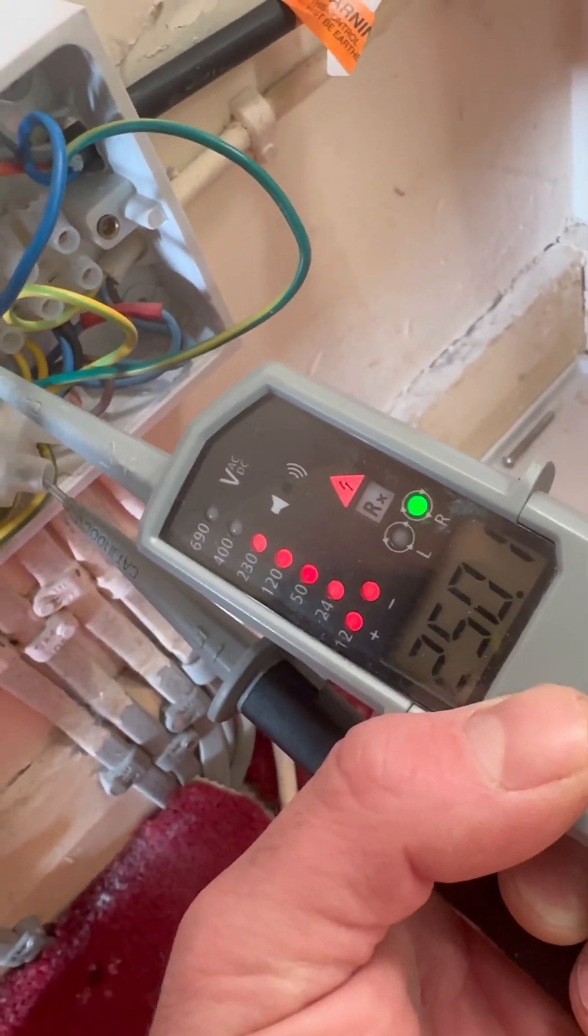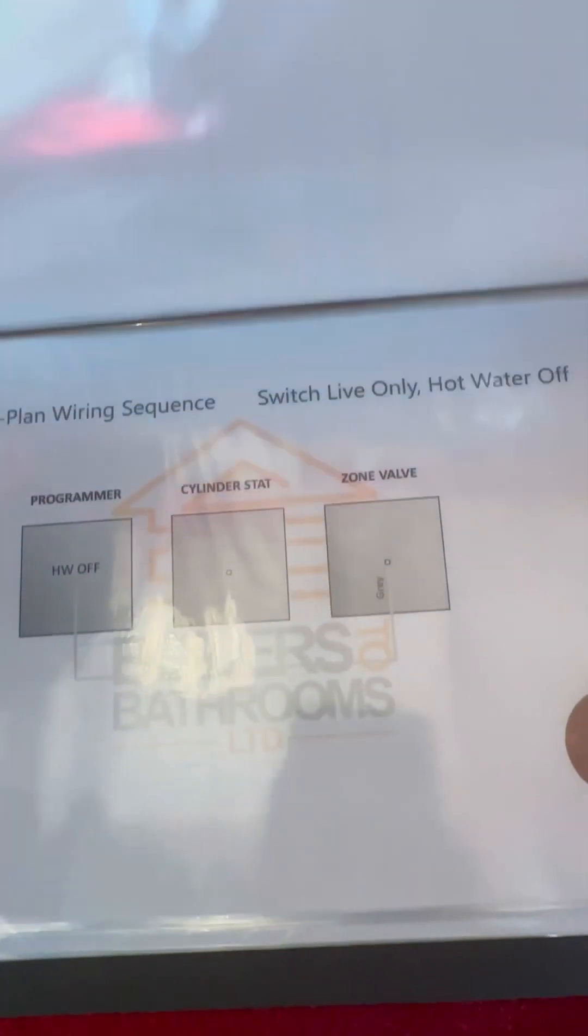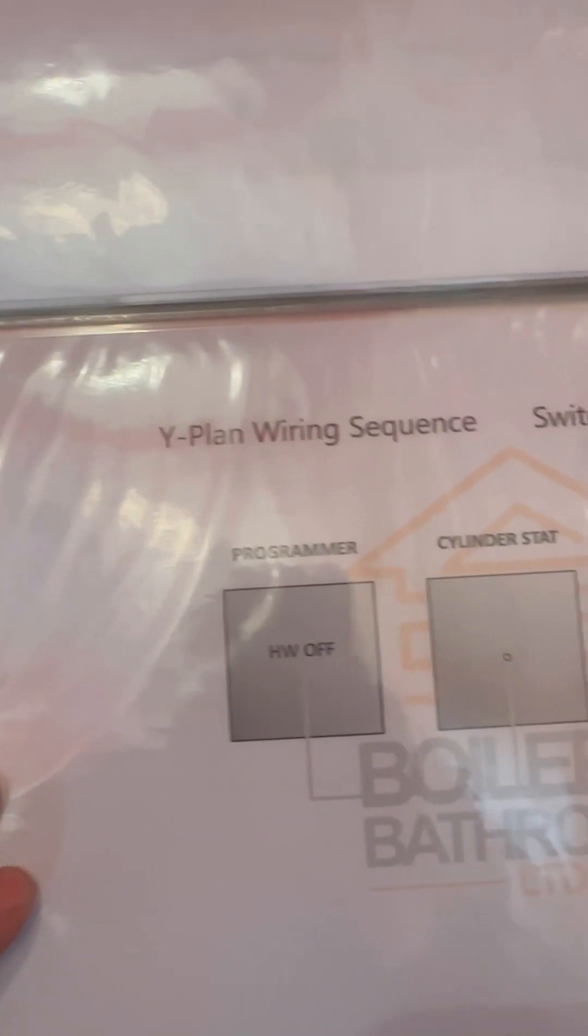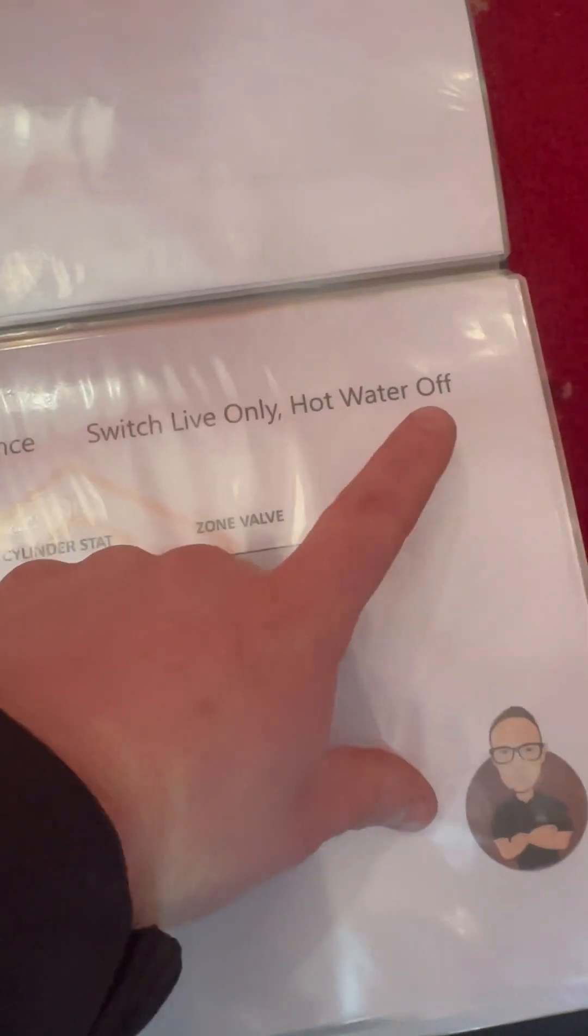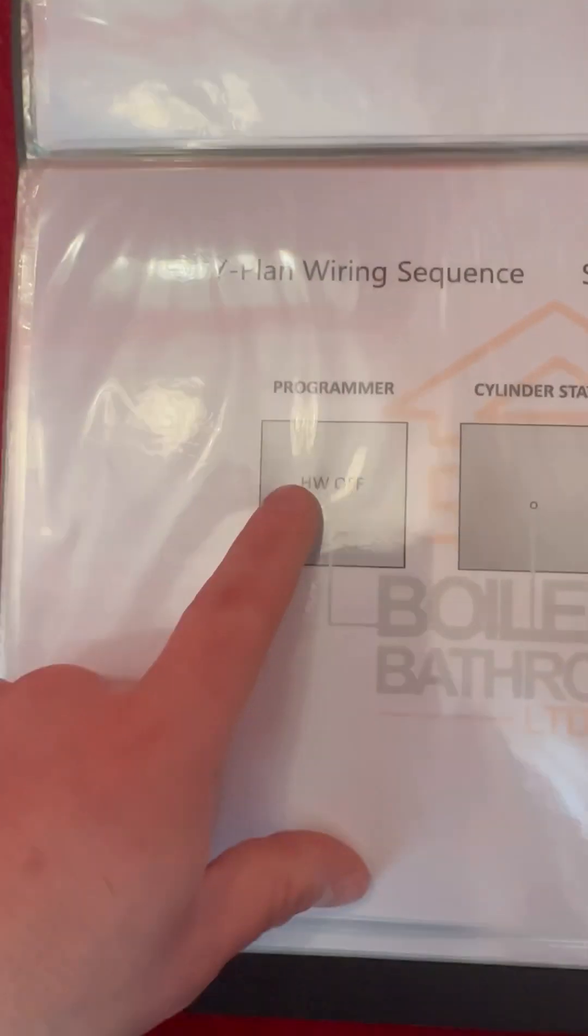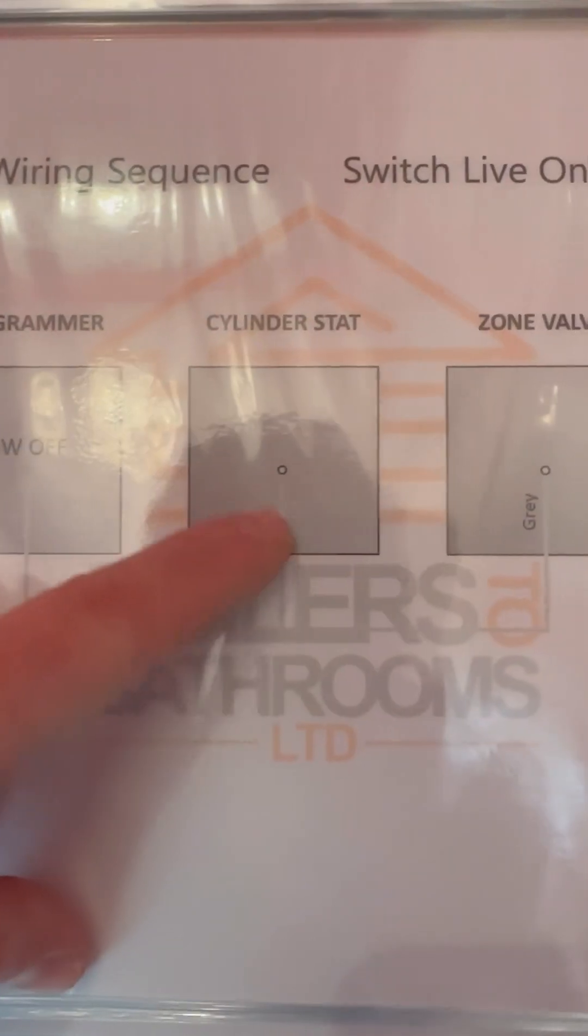But we'll get 240 on orange. And then we'll do switch live hot water off. So this will also check to make sure the programmer's doing its job properly because it should send 240 up to gray.